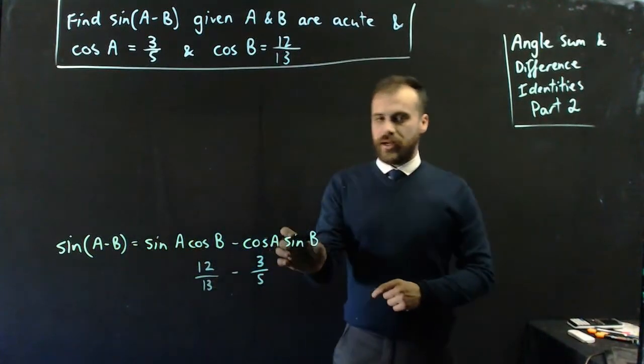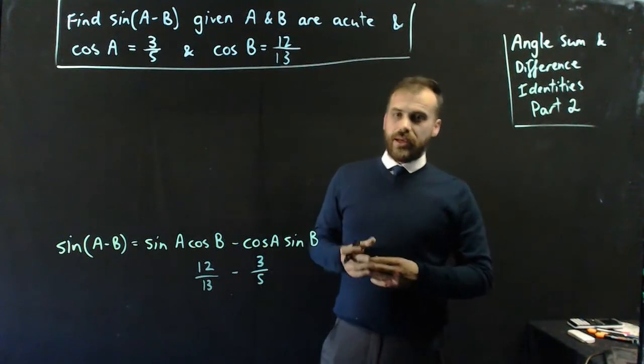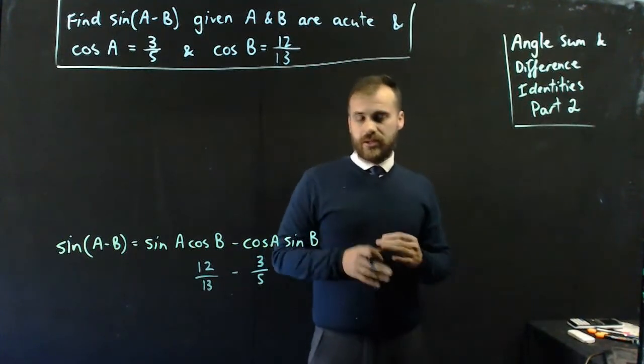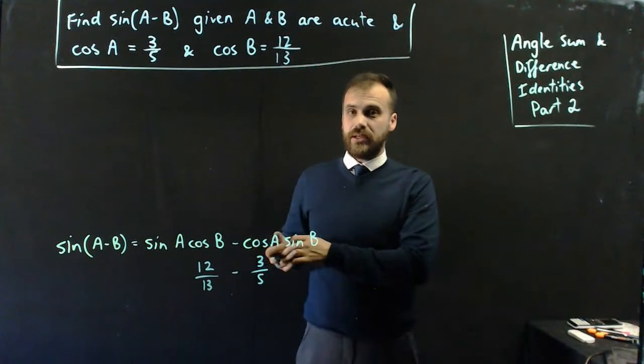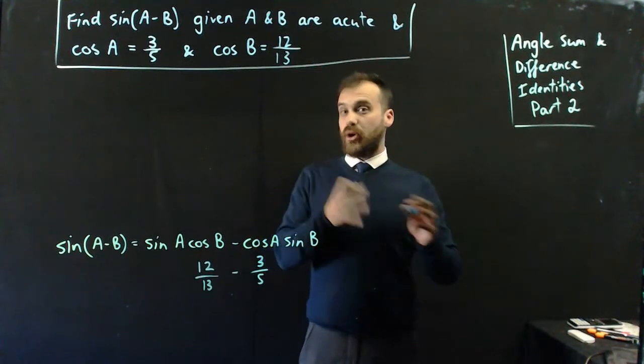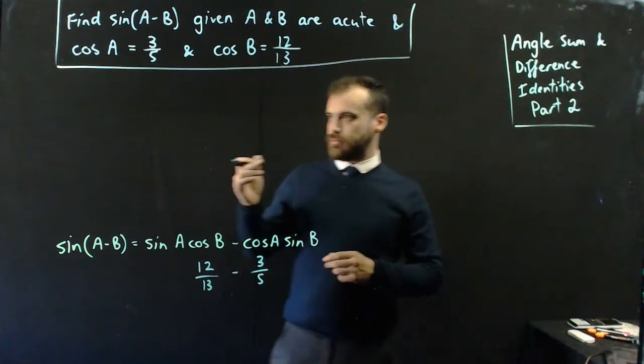Now, what I need is sine a and I need sine b. Now, if you know cos of something, you can find sine of something because you have the Pythagorean identity.